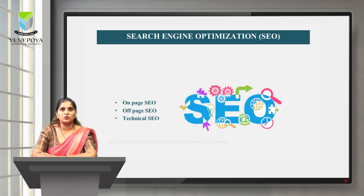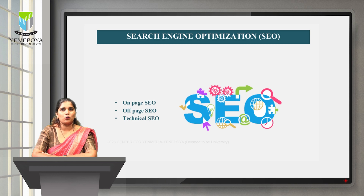Search engine optimization (SEO) is the process of optimizing your website to rank higher in search engine result pages. There are a number of ways to approach SEO in order to generate qualified traffic to your website. The first is on-page SEO, which focuses on all the content that exists on the page when someone accesses your website, such as blog articles, to help optimize your website.